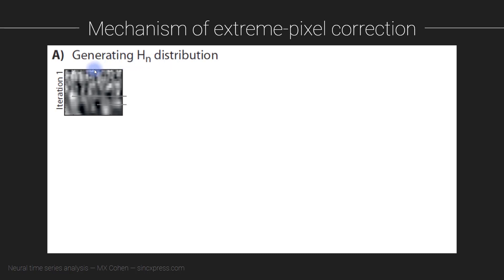After you've gone through one loop to create all of the null hypothesis maps, you go through a second loop back through all of the permuted, shuffled maps. Now you don't need to threshold — instead, you look through each map and find two pixel values: the value that is the most negative and the value that is the most positive. You're looking for the two extremes.